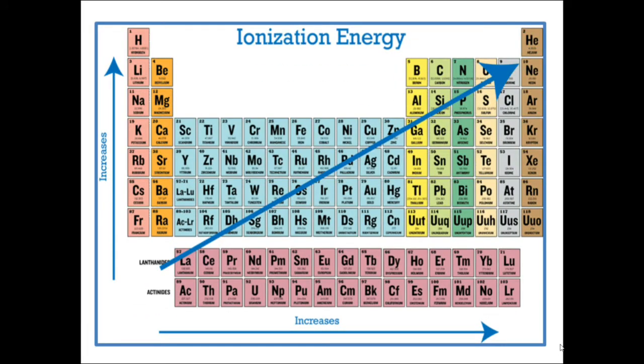Look at the periodic table. If we move from left to right in a period, the ionization energy value increases. So 1A having lower ionization energy elements whereas 8A having higher ionization energy elements. If we move from top to bottom, we observe that the lighter element having higher ionization energy and at the bottom, element having lower ionization energy.